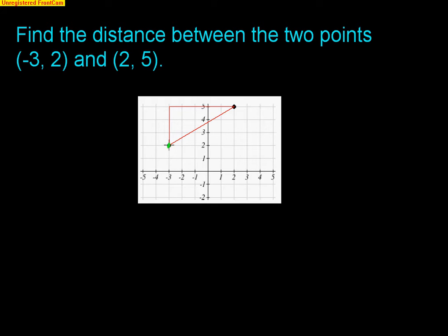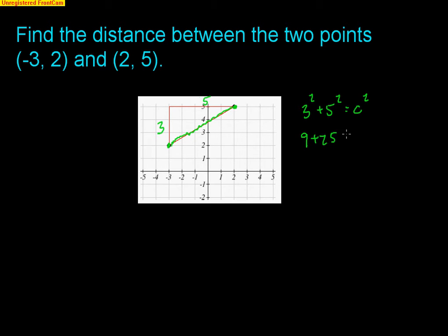Let's find the distance between two points. We have negative 3 comma 2 and 2 comma 5. The idea is how the Pythagorean theorem can be used: if we make a triangle by connecting the two dots, this is the distance we want to find. This triangle has a vertical height of 3 — that's the difference of the y's, so 5 minus 2 is 3. It has a horizontal length of 5 — that's the distance between negative 3 and 2. So we use the Pythagorean theorem: 3 squared plus 5 squared equals c squared, giving 9 plus 25 equals 34. So the square root of 34 is the hypotenuse, approximately 5.83.